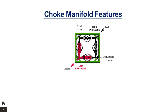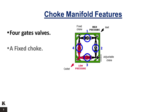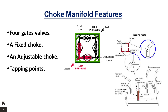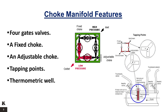The choke manifold consists of four gate valves used to isolate the choke boxes on either side of the choke manifold. A fixed choke box to insert calibrated choke beans of different diameters, depending on the pressure and flow rate required. An adjustable choke to gain quick control of the well and to change fixed choke beans without interrupting the flow. Tapping points for measurement of the upstream and downstream pressures. A thermometer well inserted in the flow path allowing the fluid temperature to be monitored.